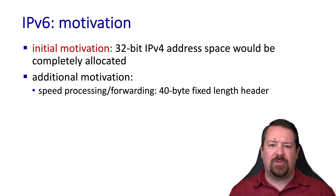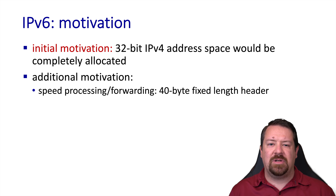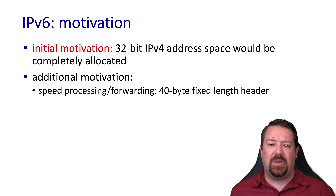At that time there was also a concern about the computational complexity of processing IPv4 headers, and so a number of the changes in the IPv6 header were geared towards enabling those headers to be processed more efficiently. The IPv6 header is 40 bytes, and this is because of the larger address space compared to the IPv4 header's 20-byte minimum size.